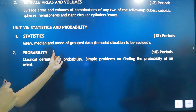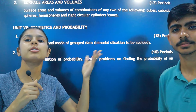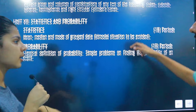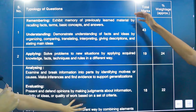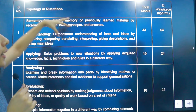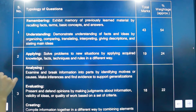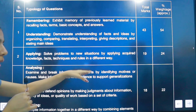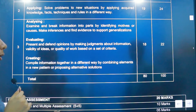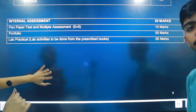In Statistics, there are three formulas: mean, median, and mode for grouped data. In Probability, you need the probability definition and how to calculate event probabilities — dice and card related problems. The weightage breakdown shows: remembering and understanding is 54%, worth 43 marks; applying formula is 24%; and analyzing, evaluating, and creating is 22%. Internal assessment is 20 marks and theory is 80 marks.